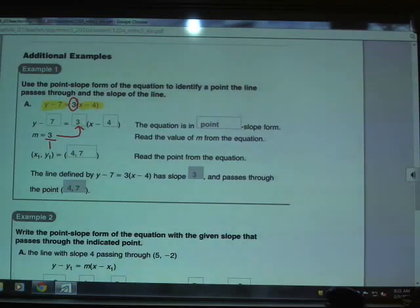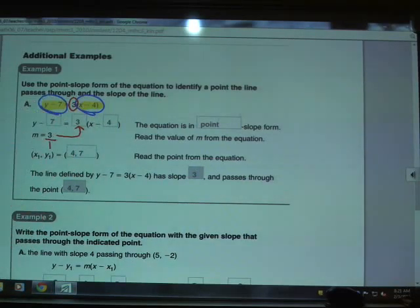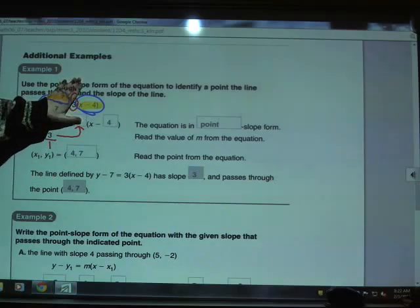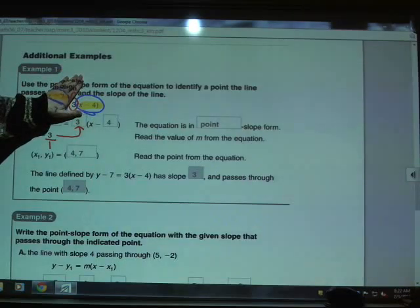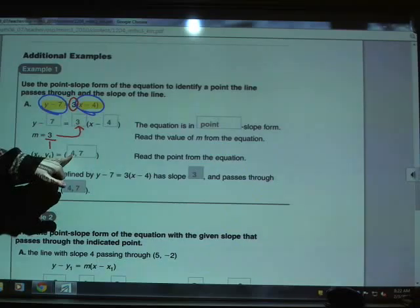Now continuing on, then they want us to go ahead and find the x and the y point as we read this from the equation. What you're doing to find x and y is you're taking these chunks that have x and y in them and figuring out what values you would plug in for x and y to make those equal 0. When I look at this x point over here, it says x minus 4. What value would I plug in for x to make this thing equal 0? Well, x would have to be 4 because 4 minus 4 is 0. And that's why your x point here is 4.